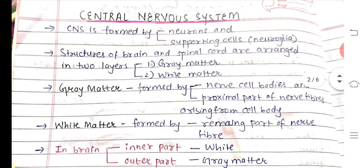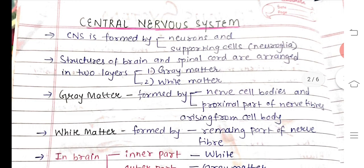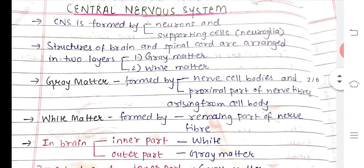The central nervous system is formed by the neurons and the supporting cells. The supporting cells are called neuroglia. The structures of the brain and spinal cord are arranged in two layers: grey matter and white matter. Grey matter is made of nerve cell bodies and the proximal part of nerve fibers arising from the cell body, while white matter is made of the remaining part of nerve fibers.